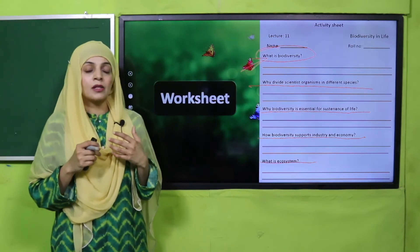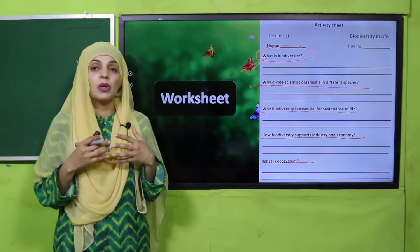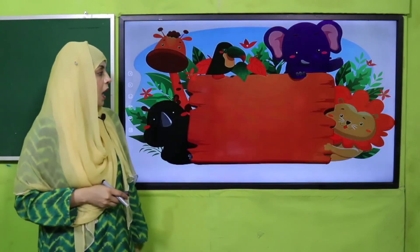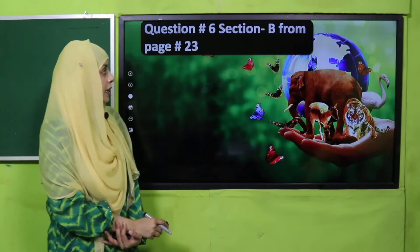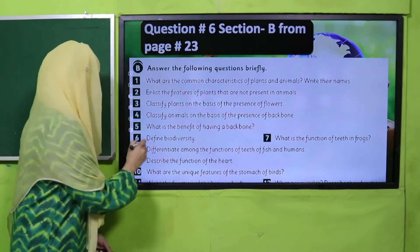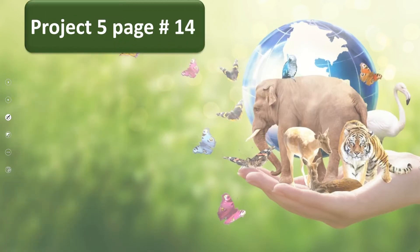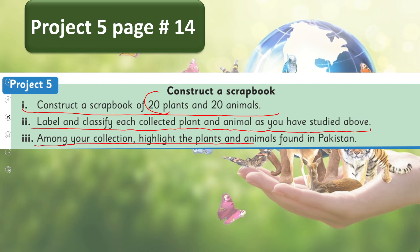What is an ecosystem? An ecosystem is the interconnection between animals, plants, and their surroundings. For homework, do question number 6 from Section B, page number 23: 'Define biodiversity.' You will do it in your notebooks. Also, do Project 5 on page number 14: construct a scrapbook of 20 plants and 20 animals — label and classify each collected plant and animal as studied, and highlight the plants and animals you can find in Pakistan.